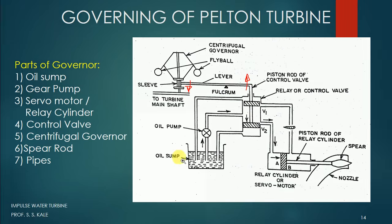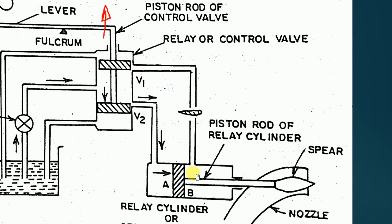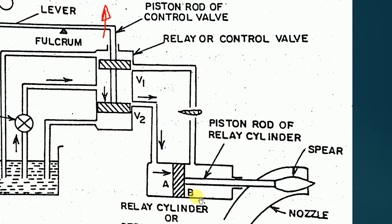Now the oil coming from the pump is connected to V1 rather than V2. From V1, the oil enters the rod-side part of the piston — zone B. When this oil arrives, it increases the force on the piston, and as the force increases, the piston moves towards the left. As the piston moves left, the spear also moves left, coming out from the nozzle.